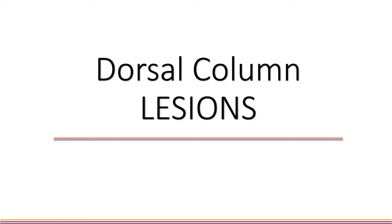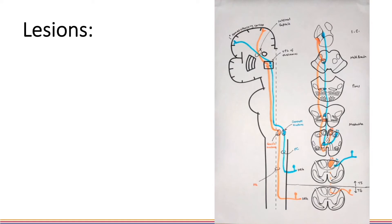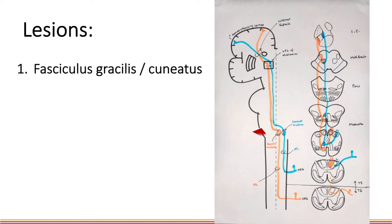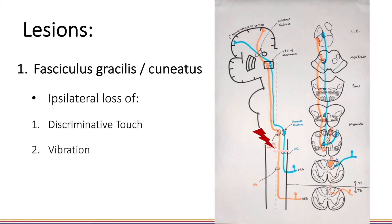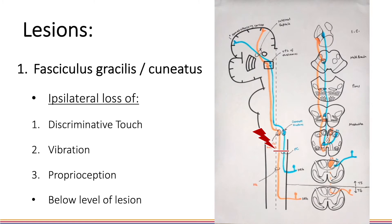Finally, let's look at lesions of the dorsal column pathway. A lesion in the fasciculus gracilis or cuneatus in the spinal cord will lead to ipsilateral loss of discriminative touch, vibration and proprioception below the level of the lesion. The loss is ipsilateral because the fibres have not yet decussated.